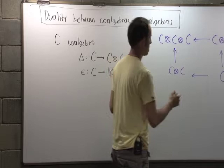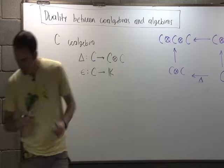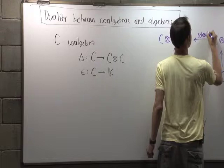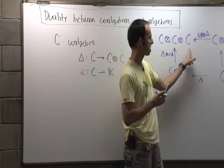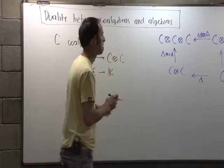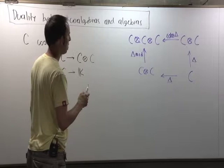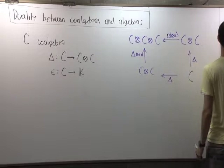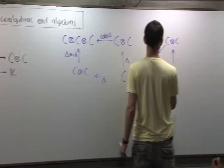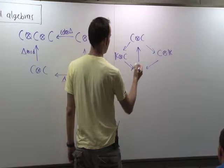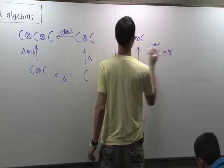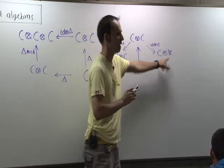The co-associative axiom says: if we start with an element of C and apply the co-product and then the co-product on the right, we get the same thing as if we take the co-product and then apply the co-product on the left. That is co-associativity. The co-unit property says that these diagrams commute — identity tensor with co-unit, co-unit tensor with identity — and these are the canonical isomorphisms.